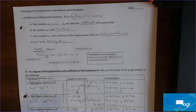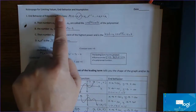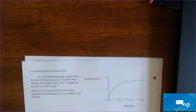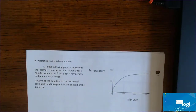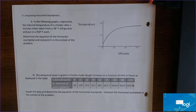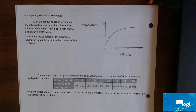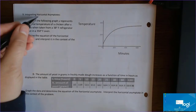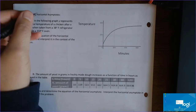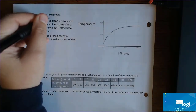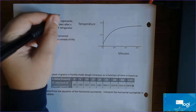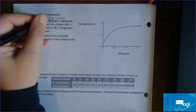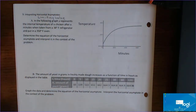This video continues the notes page for limiting values, behavior, and asymptotes — specifically the last page, which is a word problem. We want to continue talking about horizontal asymptotes in a real-world setting. When that happens, we often refer to the horizontal asymptote seen in a graph as the limiting value of a function. The term 'limiting value' is the same as a horizontal asymptote.